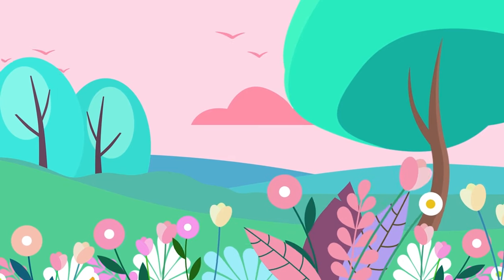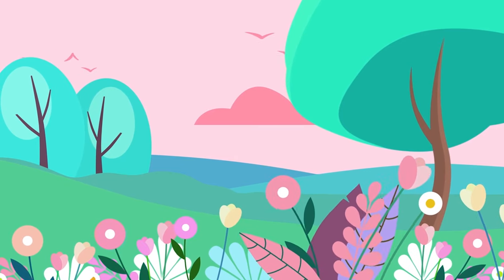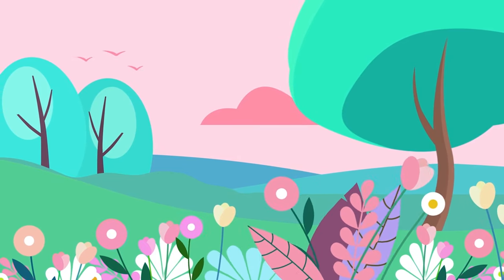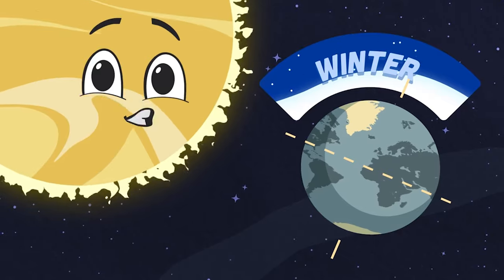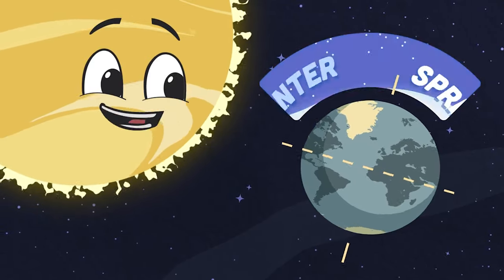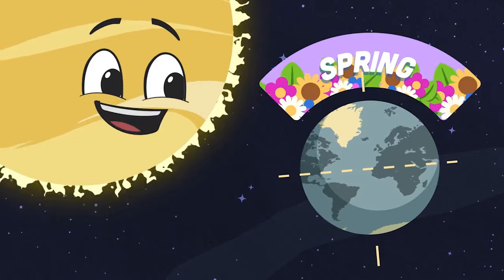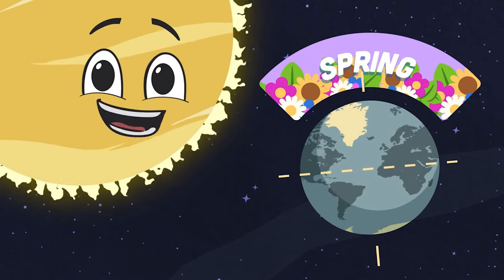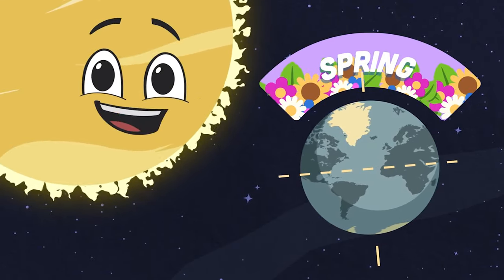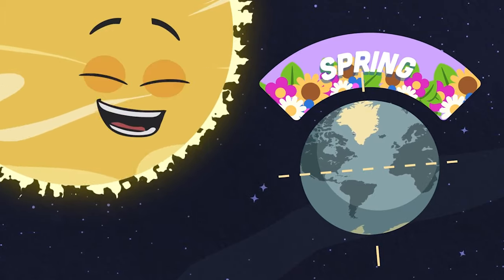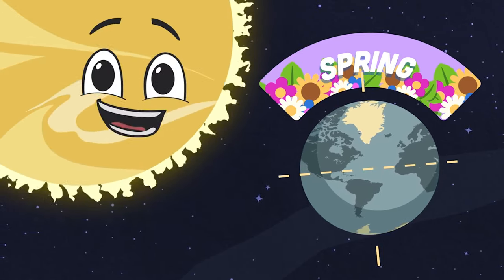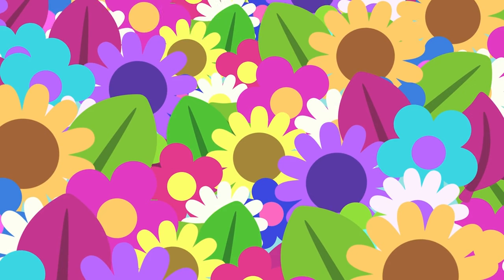After winter comes a new growth of spring. When the northern hemisphere starts to tilt towards the sun, winter starts to fade away and spring has begun. Spring brings warmer weather as trees grow new leaves, and flowers bloom for the birds and the bees.